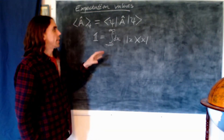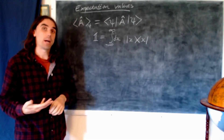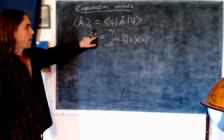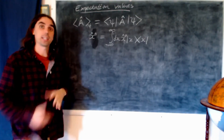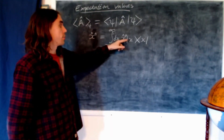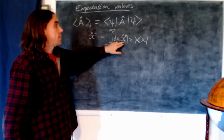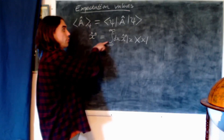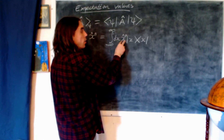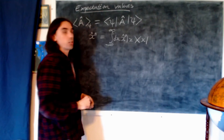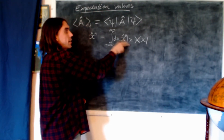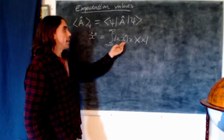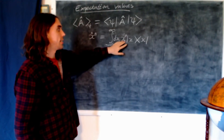Say we'd like to find the expectation value of the position operator to the power n. We can act that in from the left. The position operator to the power n acting on the identity operator is just the position operator to the power n. We've brought it through the integral, which is fine because this is the operator x to the n rather than the eigenvalue x being integrated over. The x operator acting on state x gives the eigenstate of the position operator, so acting n times brings down n powers of the eigenvalue — x to the n — which is now inside the integral.